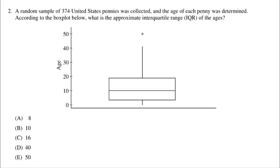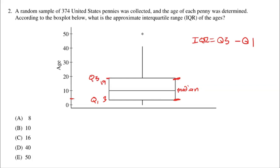In this problem we're looking at a random sample of 374 United States pennies, and the age of each penny was determined according to a box plot. The question asks for the approximate interquartile range of the data. The IQR is your third quartile minus your first quartile. The quartiles are the edges of the box, and the median is the line in the middle. Estimating from the box plot, Q1 is about 3 and Q3 is just below 20, so I'll say 19. That gives an IQR of 19 minus 3 equals 16 — choice C.